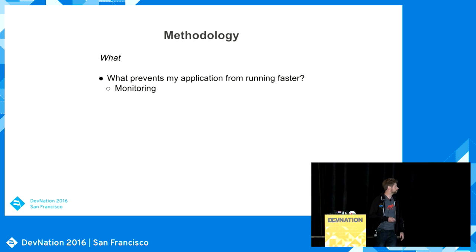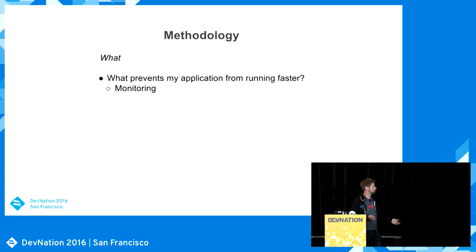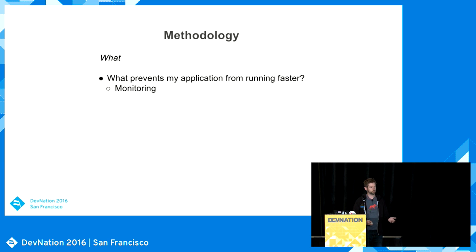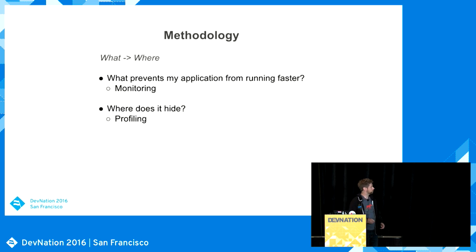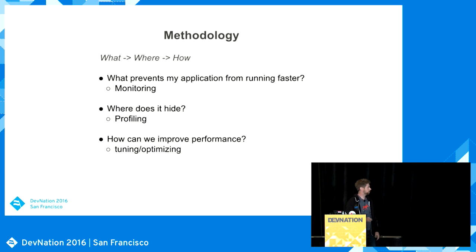The methodology: when we have a problem, the first thing we want to understand is what prevents my application from running faster. We use monitoring tools — fairly basic ones — to get an overview of what's happening on the machine before we go further on the profiling side. Then we do work to find where the bottleneck hides, using profiling tools. At the end we look at how we can improve performance.